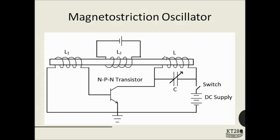Now we have a way to maintain the amplitude of the current flowing through this circuit, and we are going to use that current to produce ultrasound. Due to the alternating current, the magnetic field produced by this coil will also be alternating. That is why this rod will have alternate elongation and contraction. This alternate elongation and contraction will push the air around it, the air molecules will vibrate with that frequency, and these vibrations travelling through the air are nothing but ultrasound.